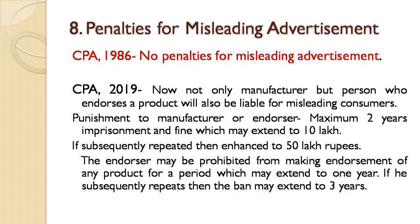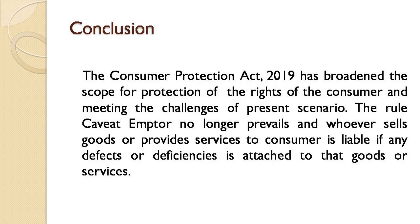The penalty for misleading advertisement is a maximum of two years of imprisonment or a fine of ₹10 lakh, and if the offence is repeated, ₹50 lakh. If an endorser makes a misleading advertisement, they can be banned from endorsing any product for up to one year; and if they repeat the offence, this ban can extend to three years. These were the major changes in the Consumer Protection Act 2019.